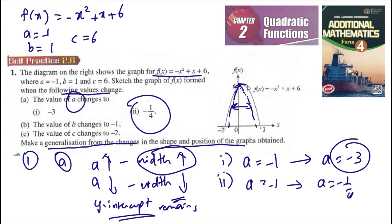We get something larger than the original graph. This new graph is wider, and the inside one is the original with a equal to negative 1.